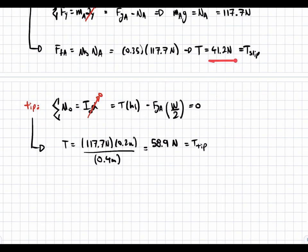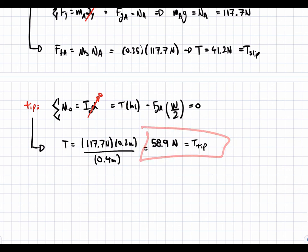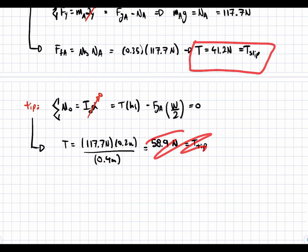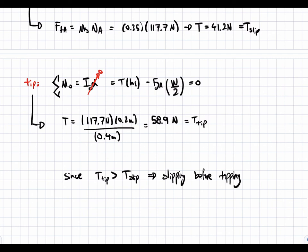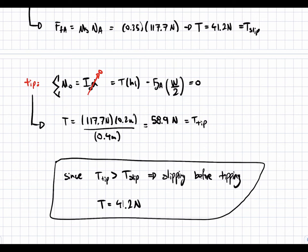We can now see that T_slip is smaller than T_tip. Therefore, when we apply T equal to 41.2 Newtons, the block will start slipping to the right but has not tipped — and it will not tip. So the block slips before tipping. Since T_tip is bigger than T_slip, we have slipping before tipping, and the required force is T equal to 41.2 Newtons.